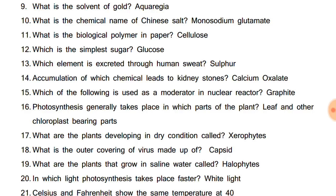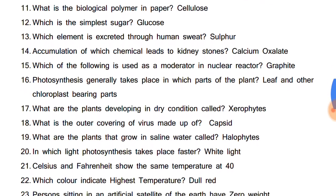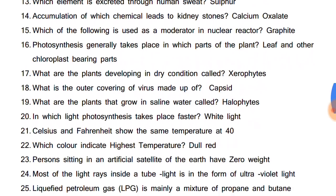What is the biological polymer of paper? Cellulose. Which is the simplest sugar? Glucose. Its molecular formula is C6H12O6. Which element is excreted through human sweat? Sulfur.